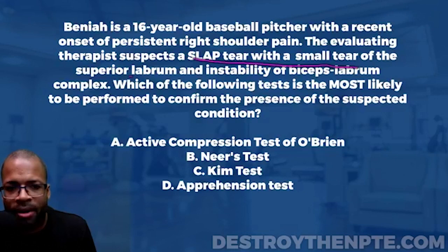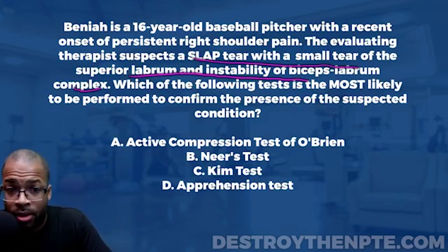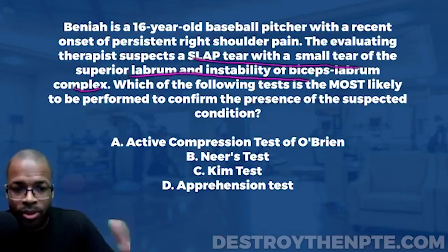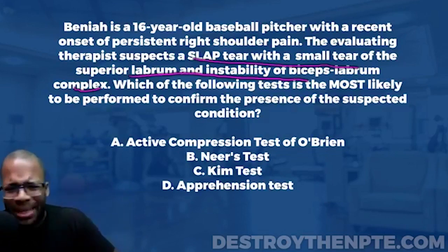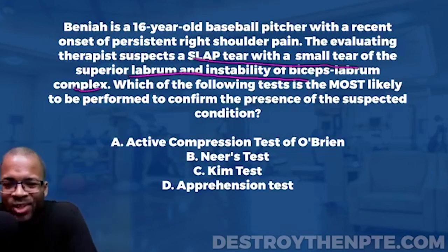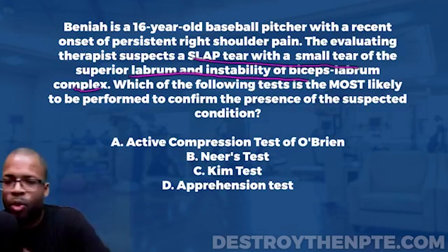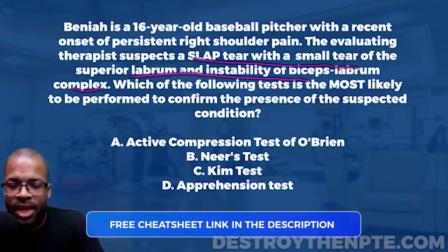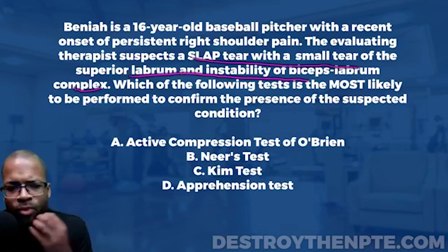This part tells us quite a bit. We know there's a problem specifically with the labrum — the superior labrum anterior to posterior. We also need to understand what 'instability of the biceps-labrum complex' means. The long head of the biceps inserts into the superior labrum region. With any torquing or rotational motion of the shoulder, the biceps gets involved, yanks on the labrum, and causes a superior labral tear anterior to posterior.